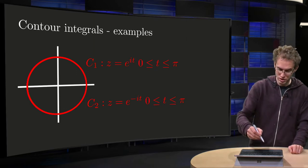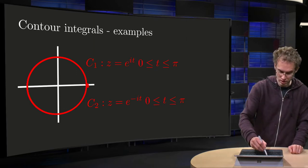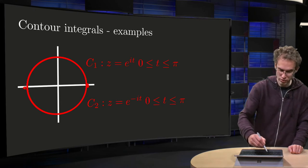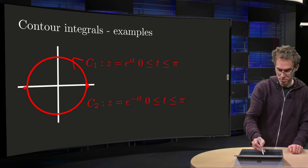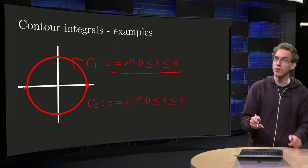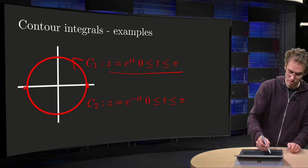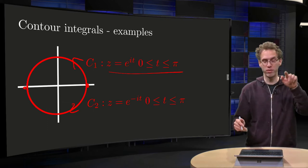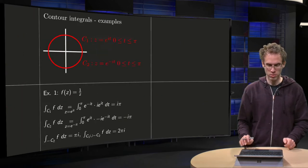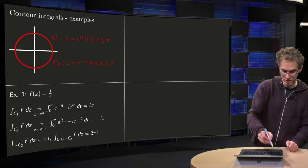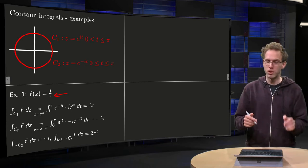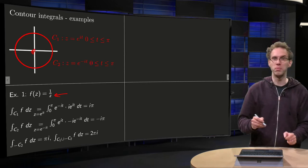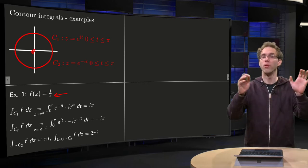So first we will take our c1 from 1 to minus 1. First we go along the circle, the top part, with this parameterization, and then we will do the same integral, but we go via the lower half of the circle. The function we take is f of z equals 1 over z. It blows up in 0, but that doesn't matter because we will stay far away from 0.